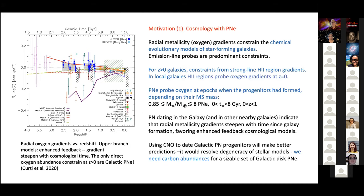We have plotted the models with straight lines. The upper group of models are with enhanced feedback, and the lower models are without enhanced feedback. All the data at redshift from zero all the way to high redshift are based on a radial metallicity gradient based on oxygen from galaxies at the given redshift from HII regions. And of course, strong line abundances, because you cannot do direct abundances at high redshift. The only direct abundances that you can put in that plot are abundances of galactic planetary nebulae. How can you put galactic planetary nebulae at high redshift?